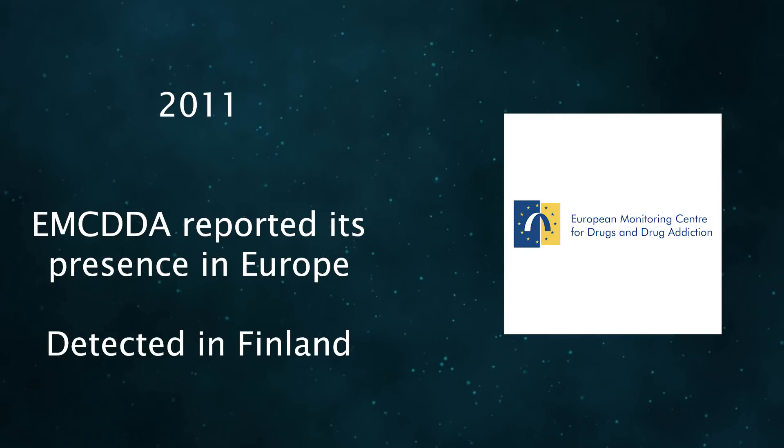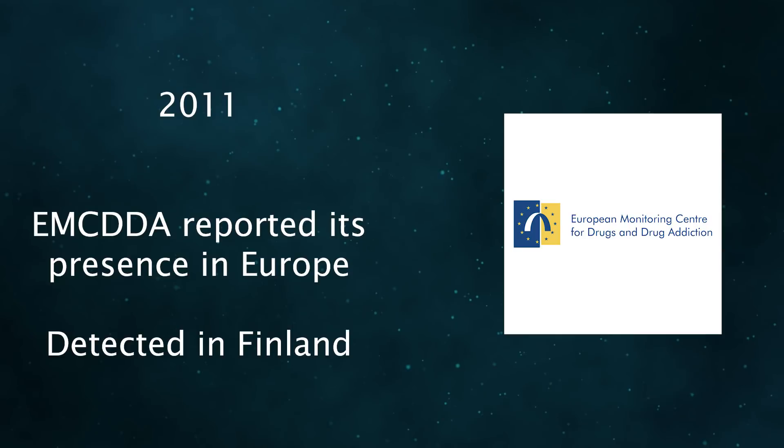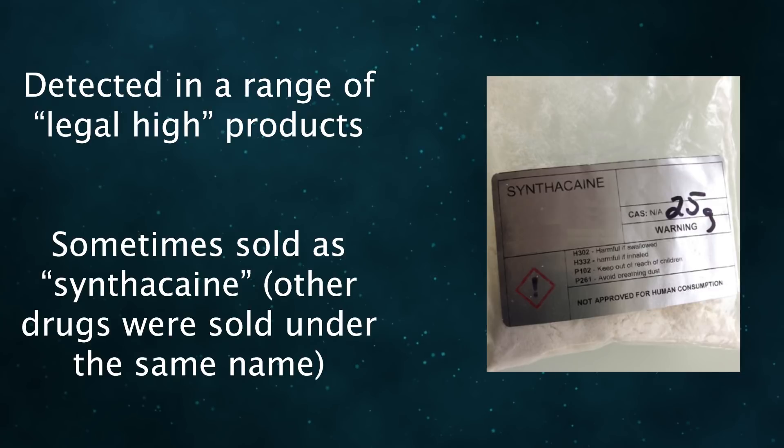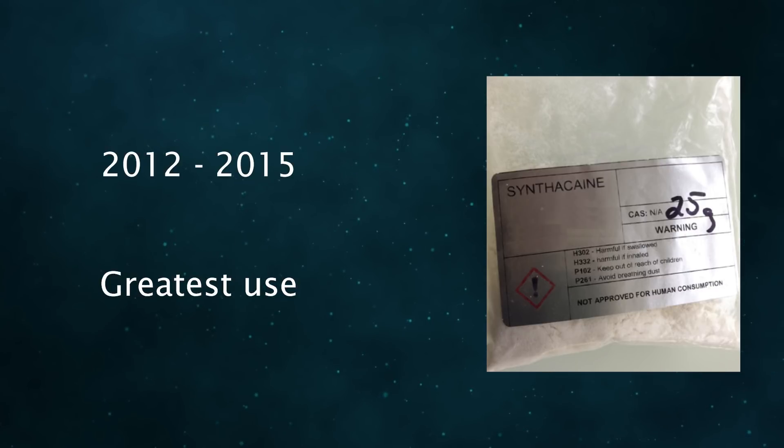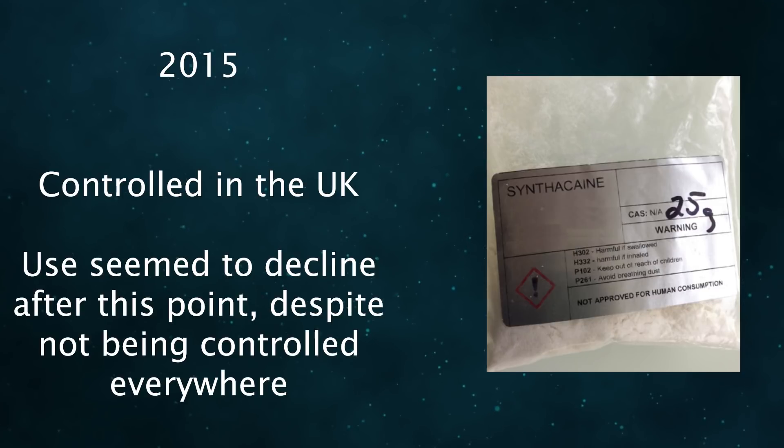The EMCDDA first reported its presence in Europe in 2011, after Finland notified the EU about its detection. Authorities in the UK started issuing alerts about the drug in 2012, after it showed up in some fatalities alongside other drugs. Testing showed the drug was present in a wide range of legal high products in Europe, sometimes with it being marketed as synthocaine. MPA's use seems to have been greatest from 2012 to 2015. Once it was controlled in the UK in 2015, MPA's use reportedly declined.